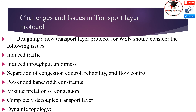Induced throughput and fairness refers to throughput and fairness at the transport layer due to the throughput, delay, and fairness existing at lower layers such as the network and MAC (Medium Access Control) layers. Separation of congestion control, reliability, and flow control: the transport layer flow can experience congestion with just one intermediate link layer congestion. Hence, in ad hoc wireless networks, the performance of the transport layer may be improved if these are separately handled, with the most important objective being the minimization of additional control overhead.